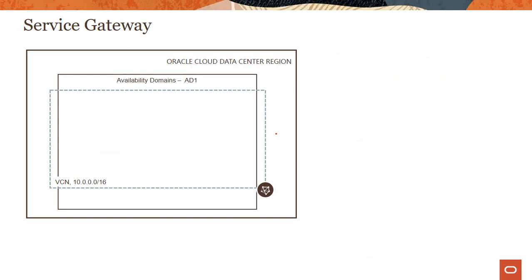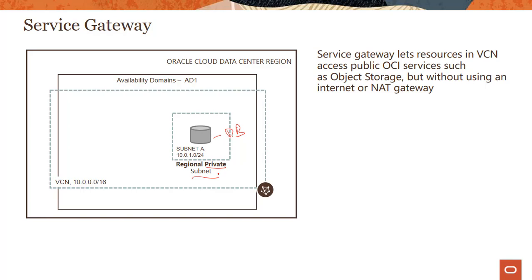The third use case is around the concept of service gateway. Let's say you have a database server running in a private subnet, but instead of getting patches, you want to do a backup. The best place to back up a database is object storage. However, the object storage service is a public service with a public endpoint. From this private instance, you cannot reach object storage because you would need a public IP address. Many customers work around this by assigning a public IP to the database, but that's not a secure design — you should never have a public IP assigned to a database server. So you create this managed service called service gateway.